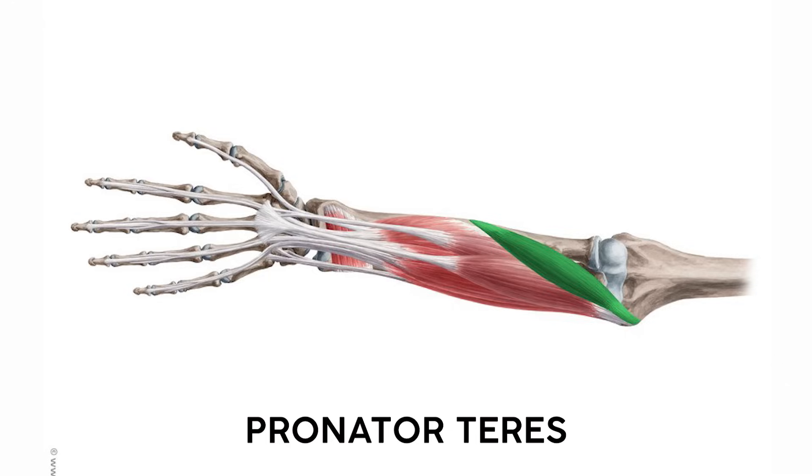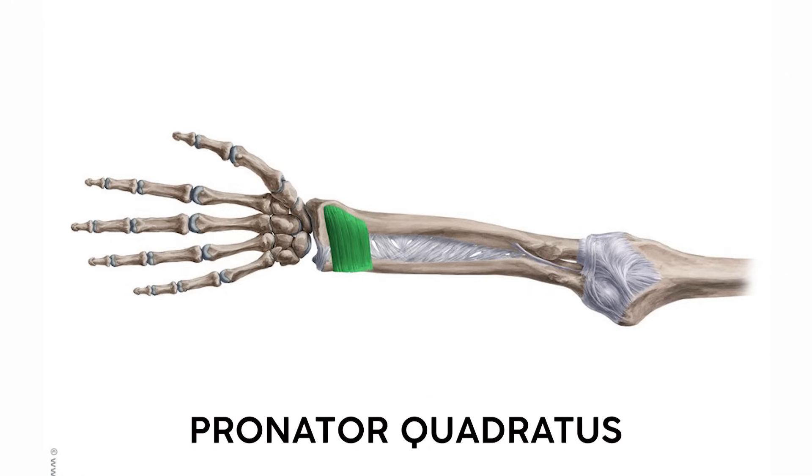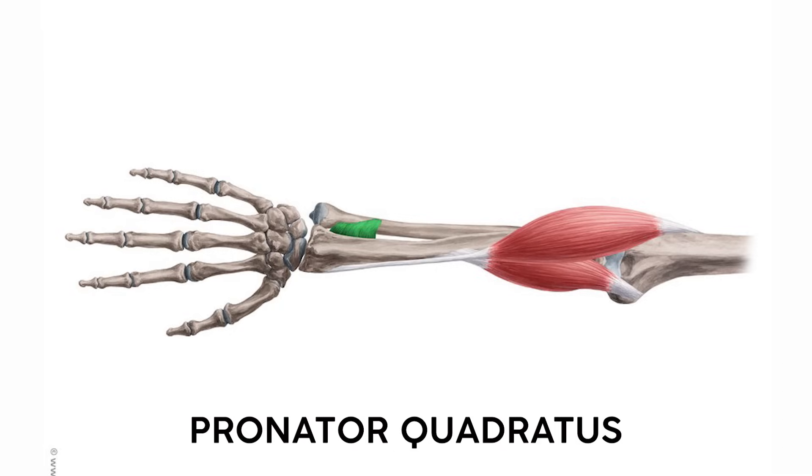Fun fact: quite a few people don't have the palmaris longus on one of their two hands, and some people don't have it at all. The pronator teres has a long but straightforward action name — it pronates the arm, pivoting your hand down. You can actually palpate it easily if you put your finger in front of your medial epicondyle and pronate your hand. The other pronator is a square-shaped muscle all the way down at your wrist. Its action is pronation, and its square shape — quadratus — gives us the name pronator quadratus.